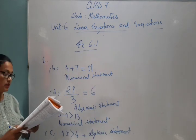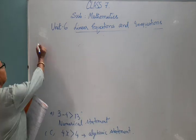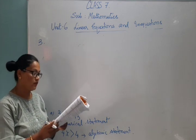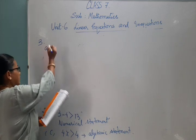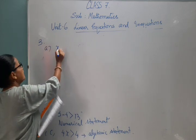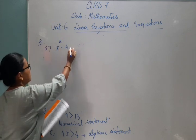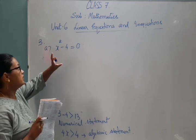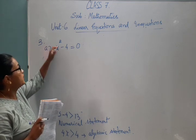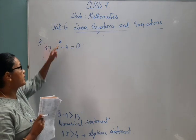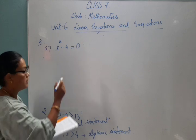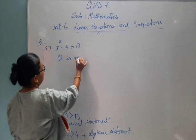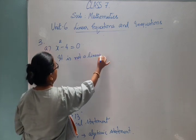We will go to question number 3: identify linear equations in one variable from the following. Number 3A: X squared minus four is equal to zero. A linear equation requires the degree to be equal to one. The degree of X here is two, which is more than one, so the given question is not a linear equation.